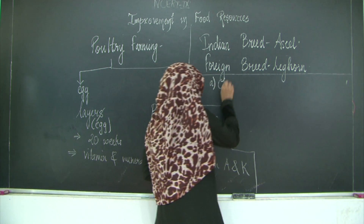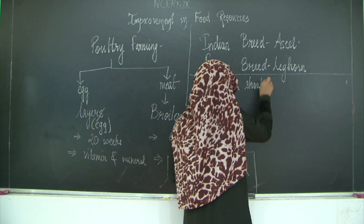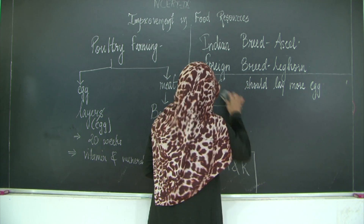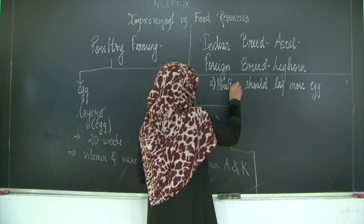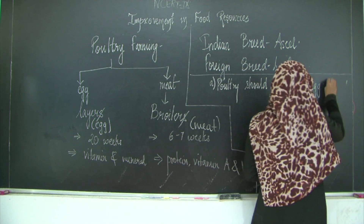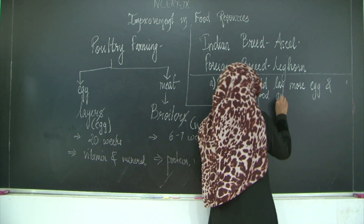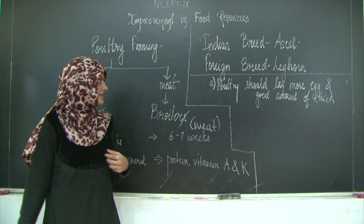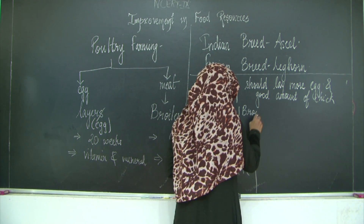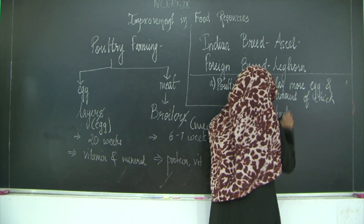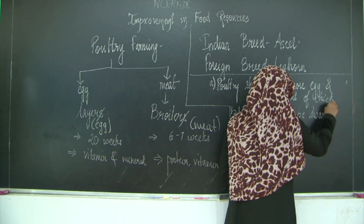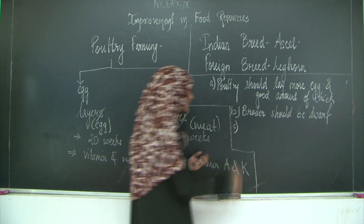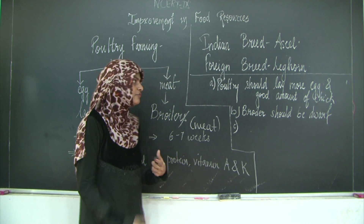The first characteristic is that the chick should lay more eggs and you should get a good amount of chicks from it. The next thing is that broilers are supposed to be dwarf — they should be dwarf so that they take less food and give more meat. The broiler chicks are dwarf; they will take less food and once they grow they will give you more meat.